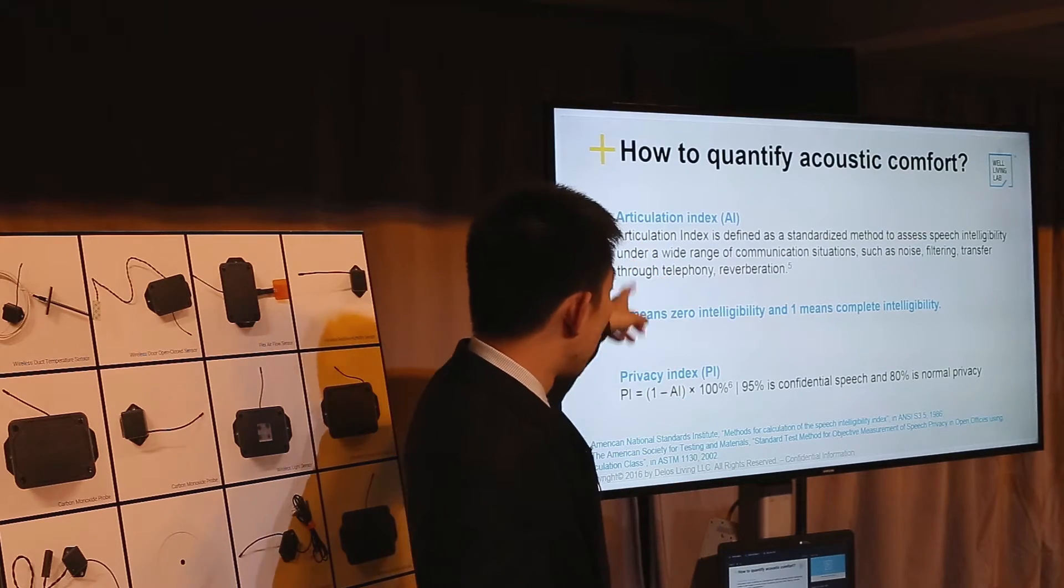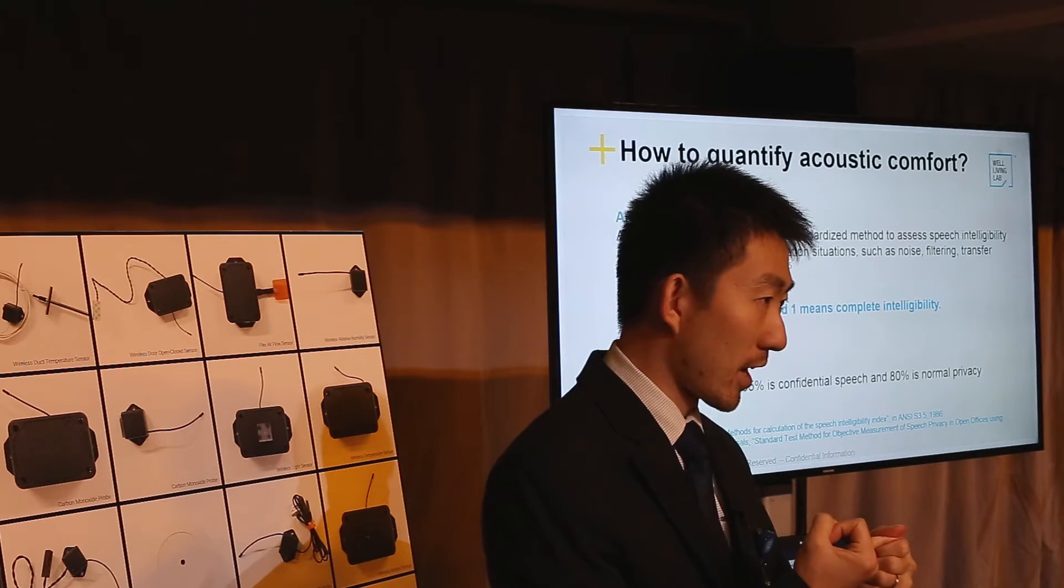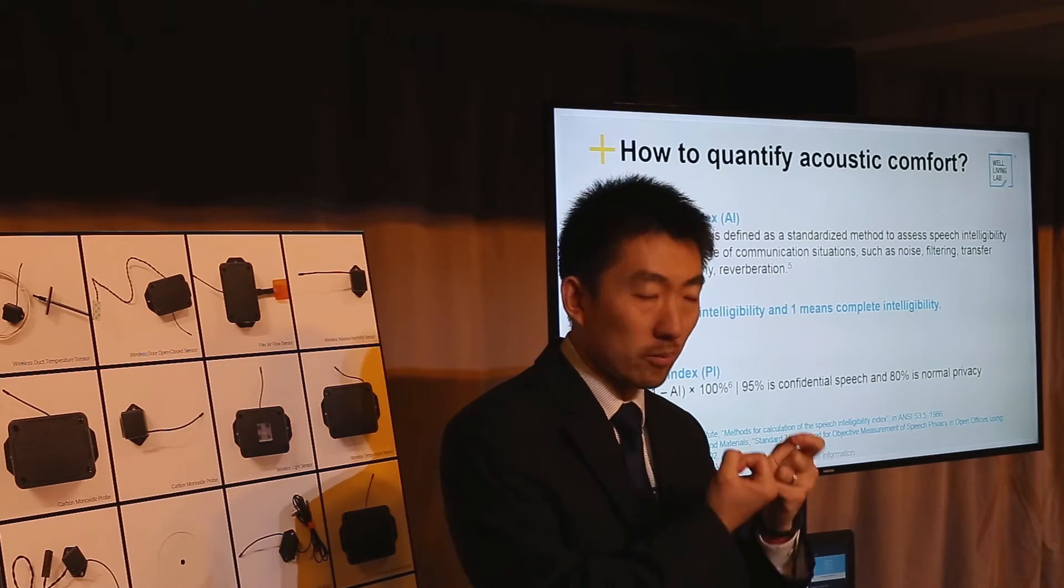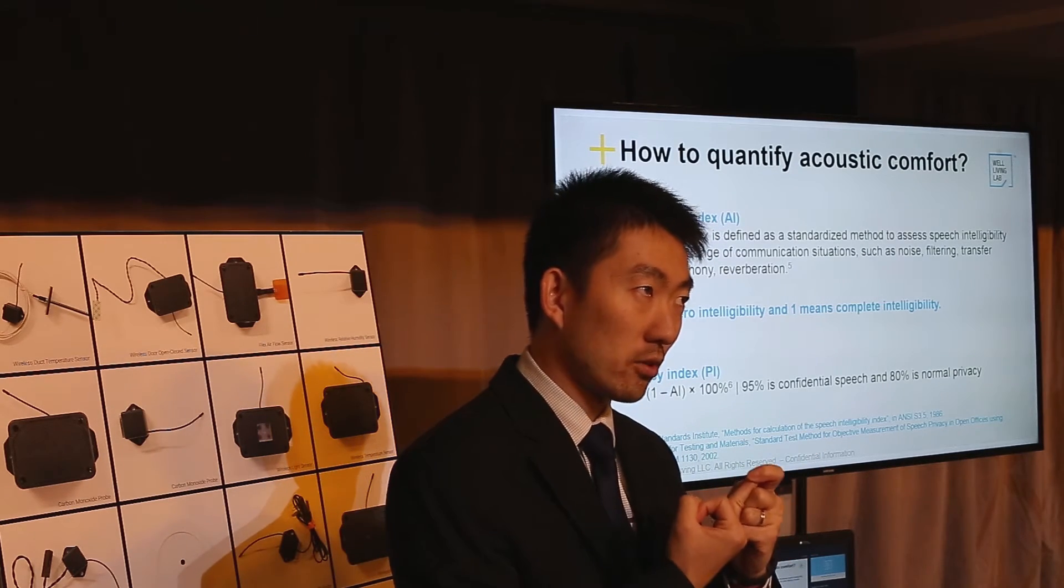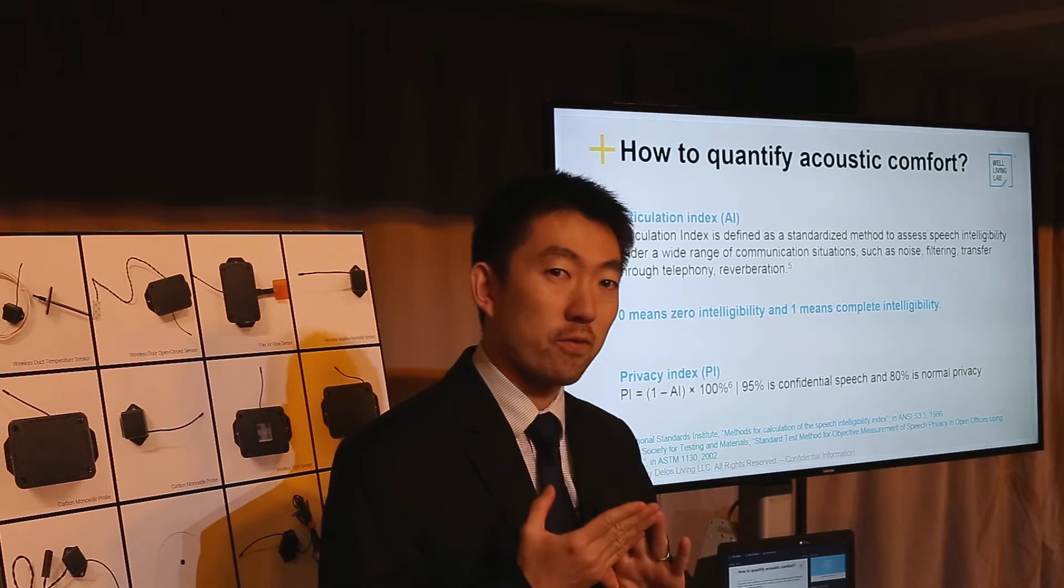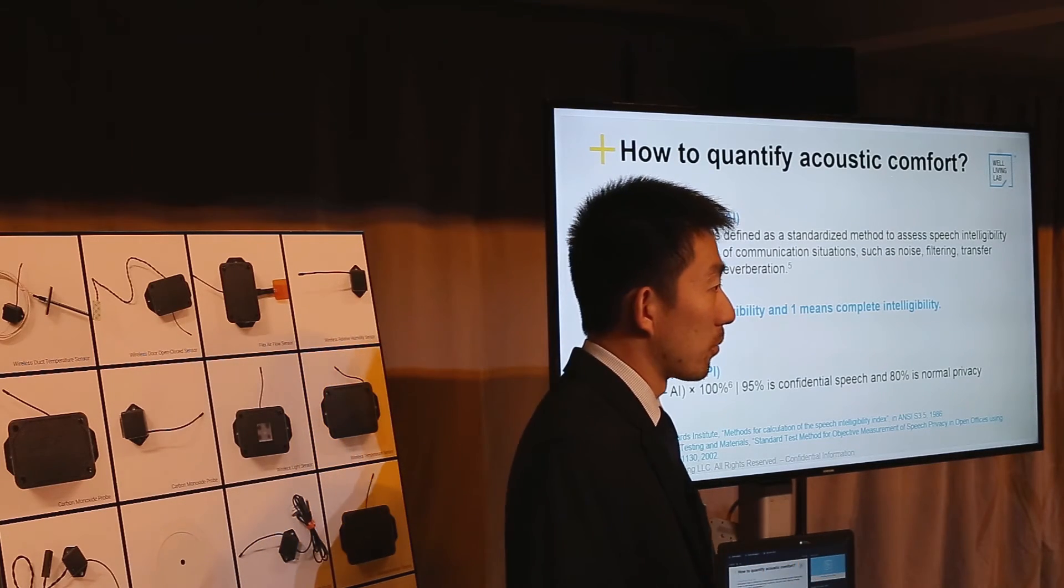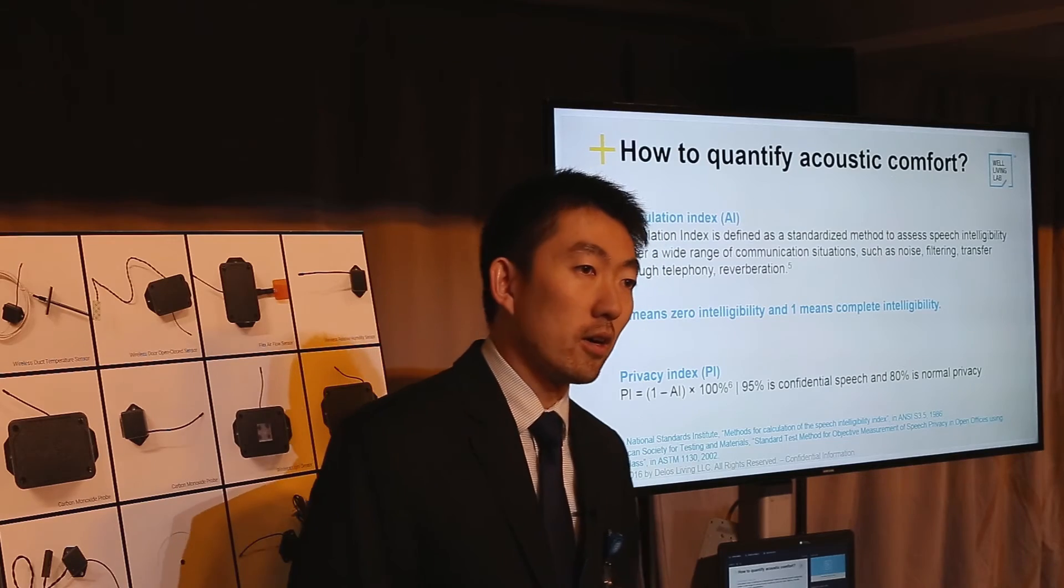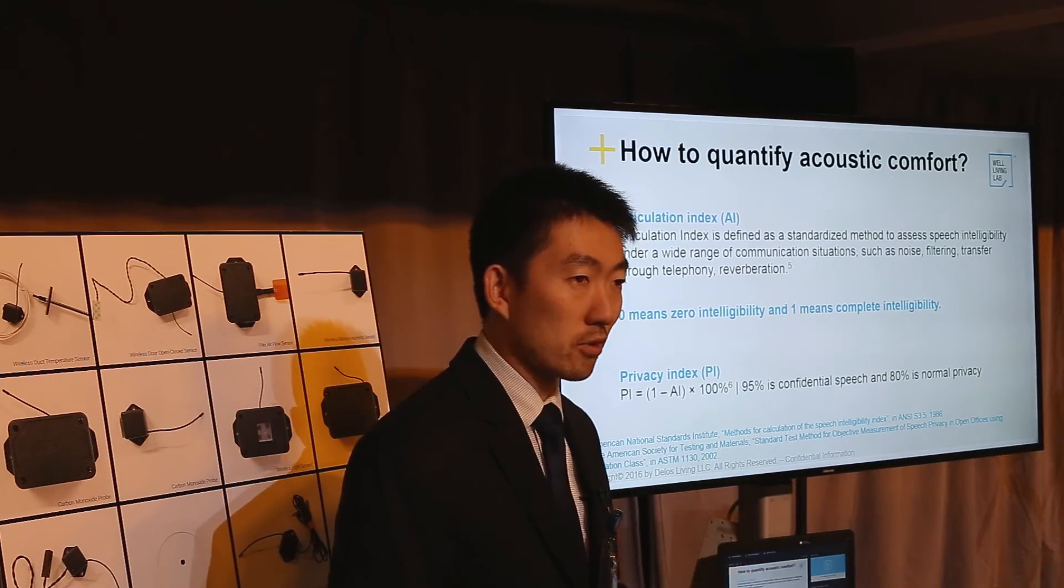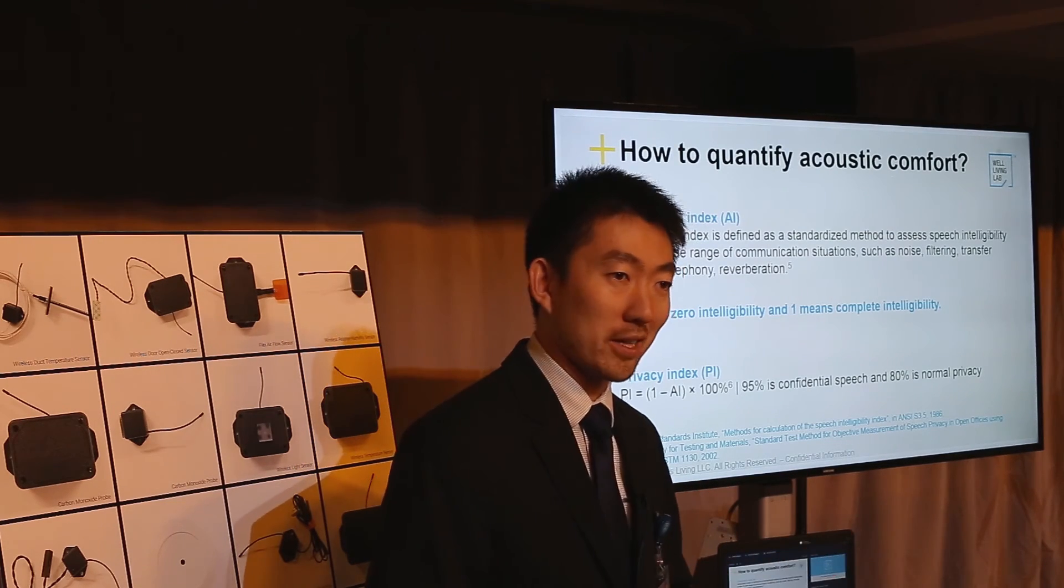These four different metrics - reverberation time, typically RT60, NC noise criteria, articulation index, and privacy index - those four metrics are typically used to quantify a built environment's acoustic comfort level. Again, these apply only to open office, sometimes classrooms, auditoriums, but not to your home. You want to be as quiet as possible in your home.